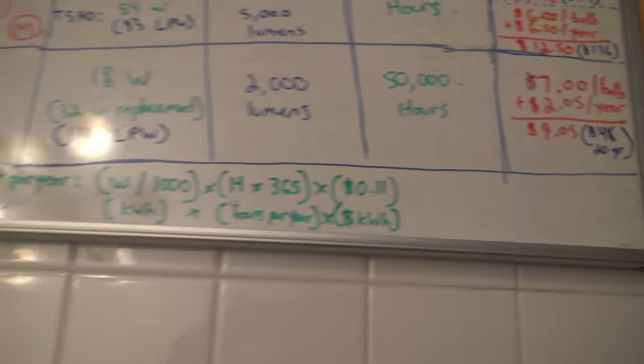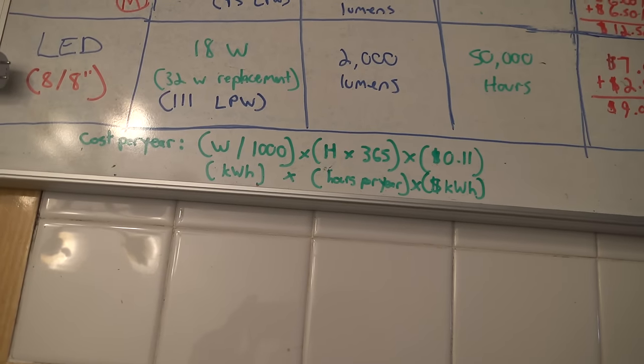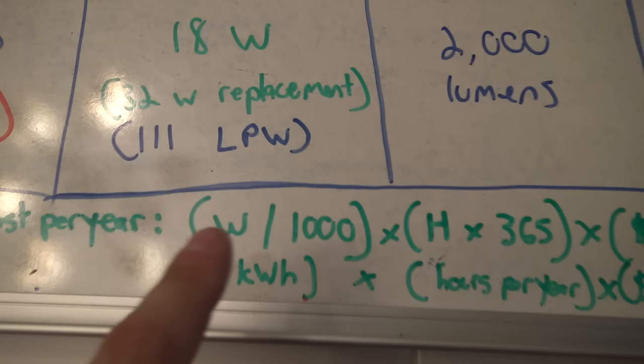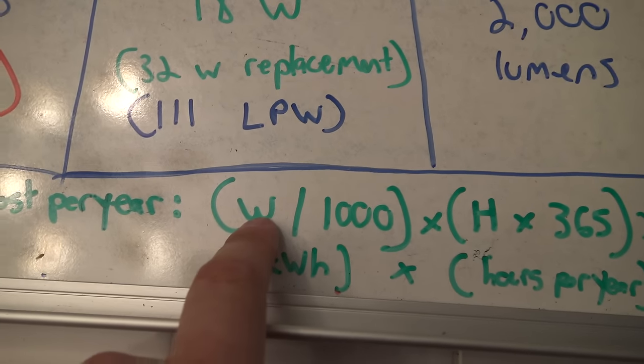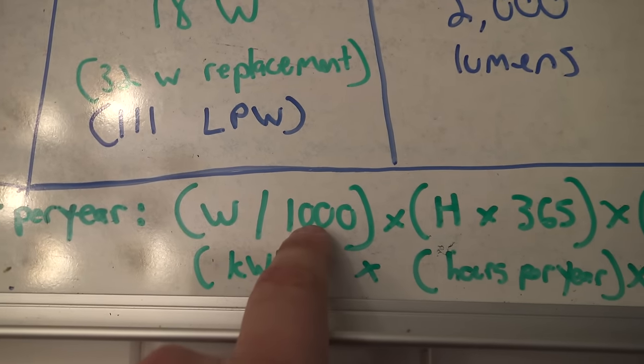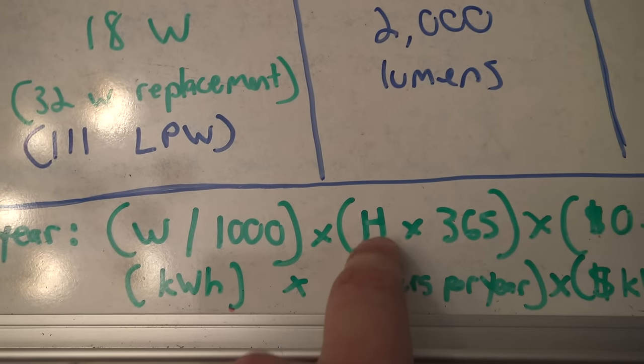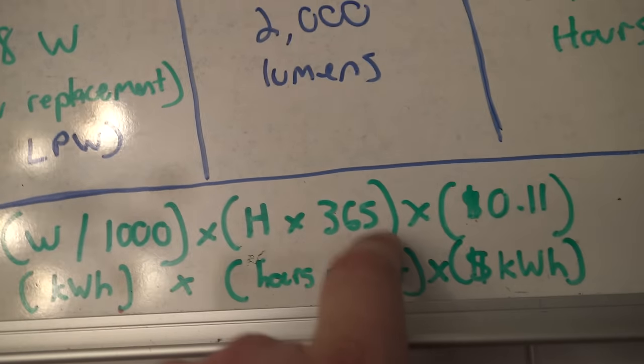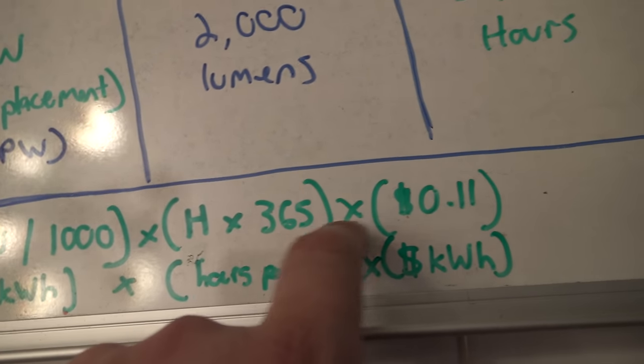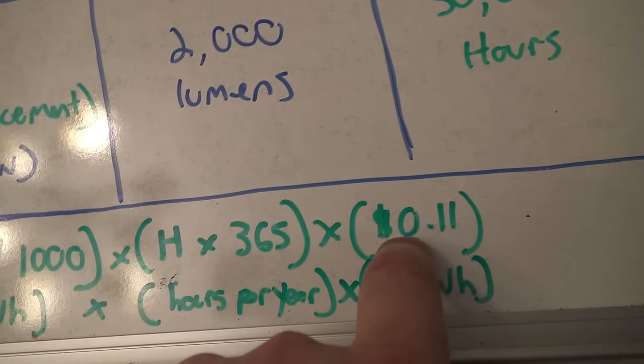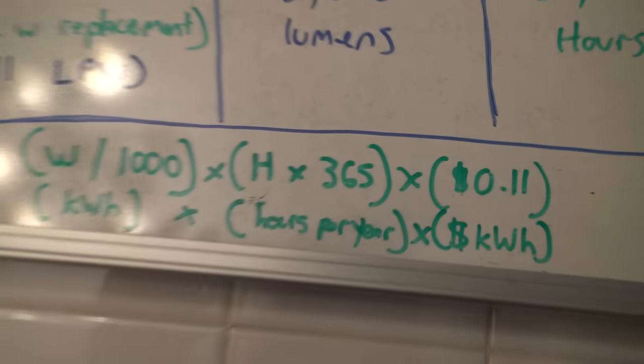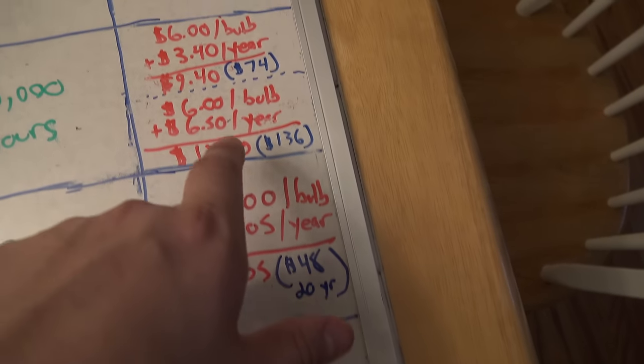But if you're interested in the equation to figure out how much a bulb is going to cost you to run per year, essentially you're looking at your watts for your light divided by 1,000, and then you multiply that by the number of hours that light is going to be on in a given day times 365 days in a year times whatever it costs for your kilowatt hours from your electric company. And that will give you essentially that operating cost there.